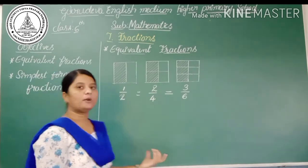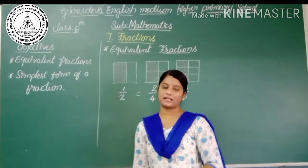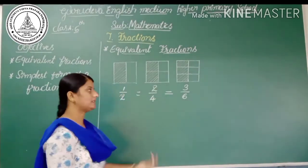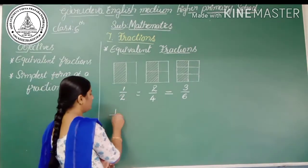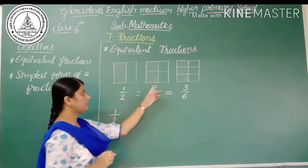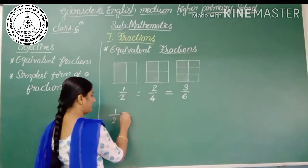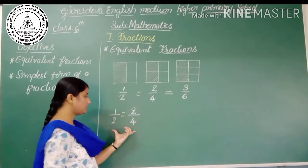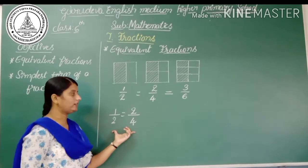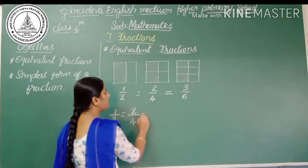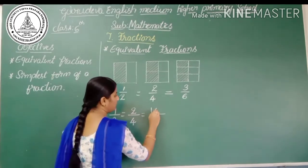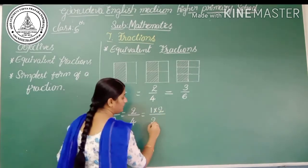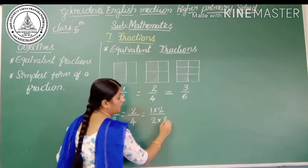Let us see how to write equivalent fractions and how these are equivalent to each other. Here 1/2 is equal to 2/4. These two fractions are equivalent. We can see that 2 can be written as 1×2 and 4 can be written as 2×2, so here also 1/2.